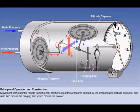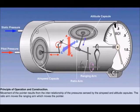An altitude capsule is also incorporated within the instrument case. This is a sealed capsule which will expand or contract as the static pressure inside the instrument case changes. Movement of the altitude capsule will move the ratio arm in the direction of C-D. A spring-loaded ranging arm transmits the movement of the ratio arm to the pointer mechanism. Movement of the pointer results from the interrelationship of the pressures sent by both the airspeed capsule and the altitude capsule, and the sequence is: the ratio arm moves the ranging arm, which in turn moves the pointer on the dial.